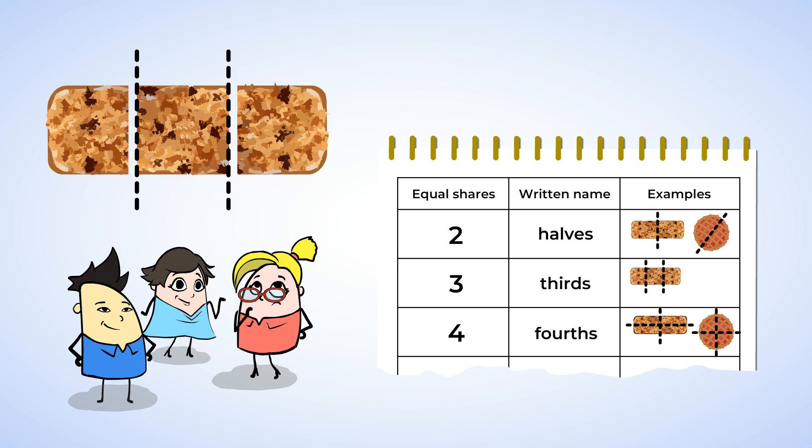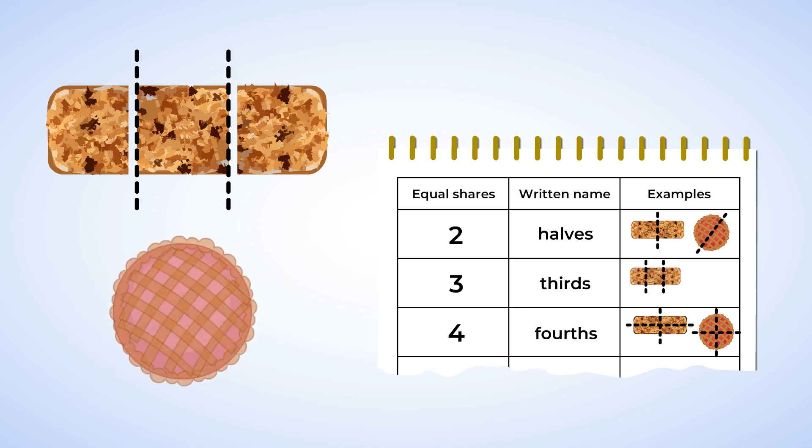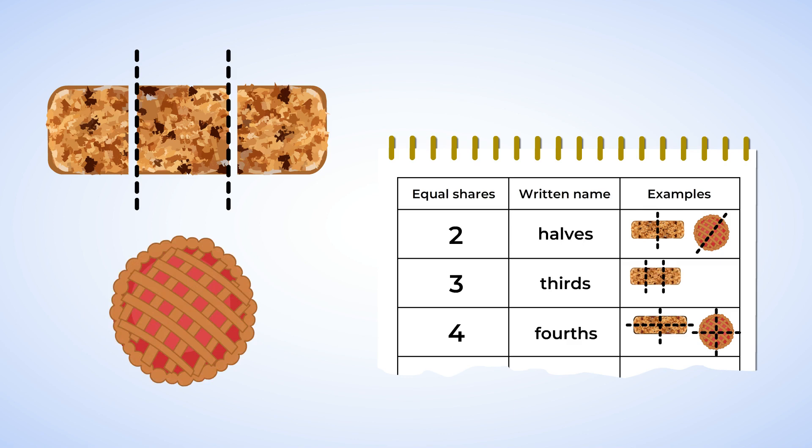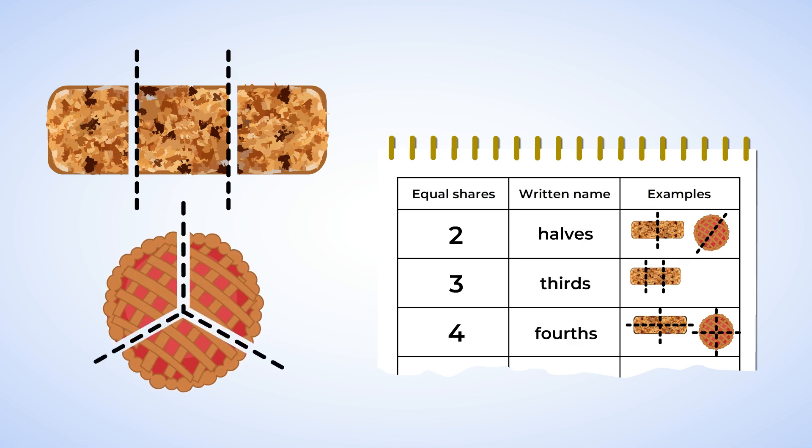Let's see how this looks with the apple pie that our three friends are splitting. We can cut it into thirds like this. You can see that each section is the same size — three equal shares, or three thirds.